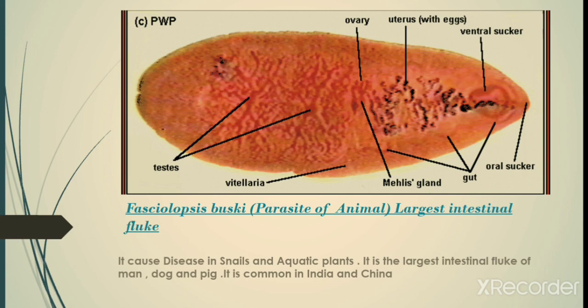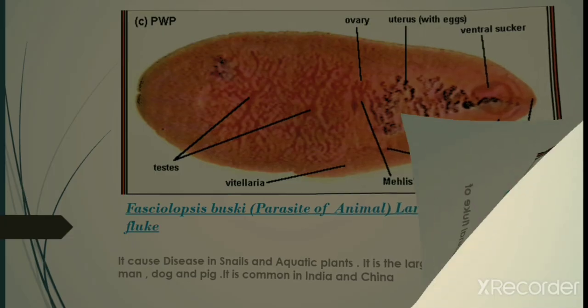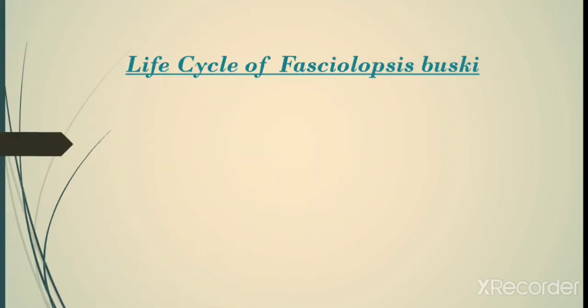Now we talk about Fasciolopsis buski. What is Fasciolopsis buski? It is a parasite of animals and is the largest intestinal fluke. It causes diseases in snails and aquatic plants. It is the largest intestinal fluke of man, dog, and pig. It is common in India and China. Now we talk about the life cycle of Fasciolopsis buski.